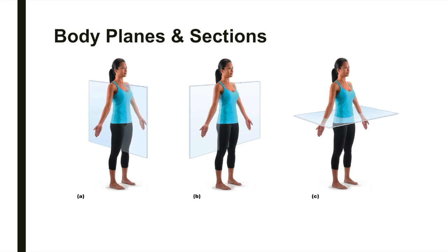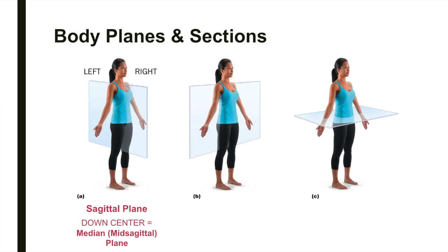To observe internal organs, you'll need to make a section, or cut, through a body along a specific plane. There are three planes used to describe different anatomical sections. A sagittal plane runs longitudinally, dividing the object into right and left parts. If a sagittal plane runs down the center of an object, dividing it into equal parts, it's called a median plane, or midsagittal plane.